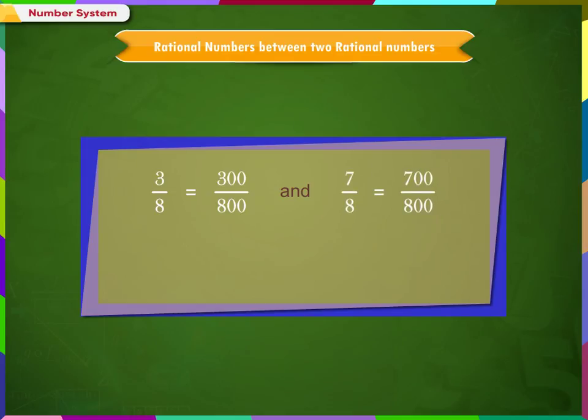So, rational numbers 301/800, 302/800 till 699/800 also fall between 3/8 and 7/8.